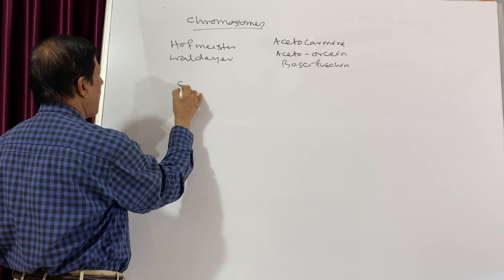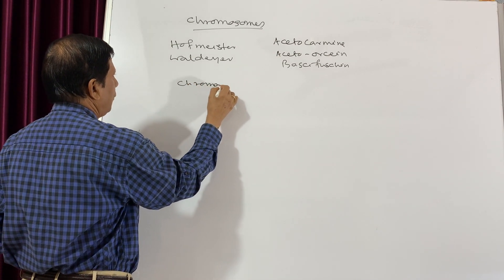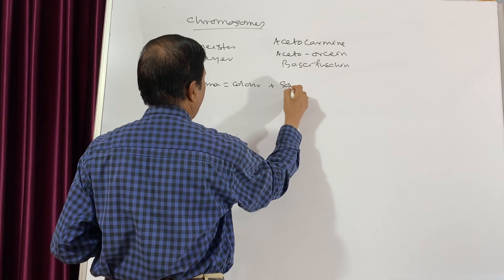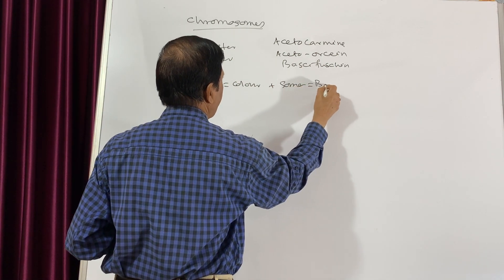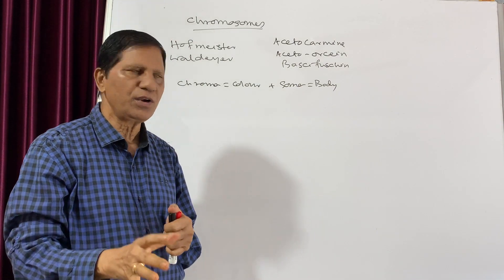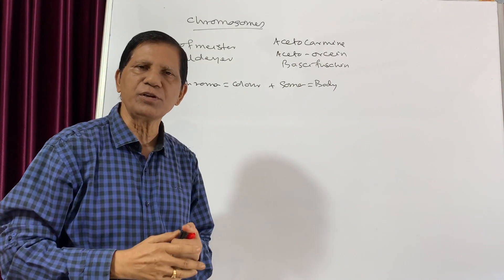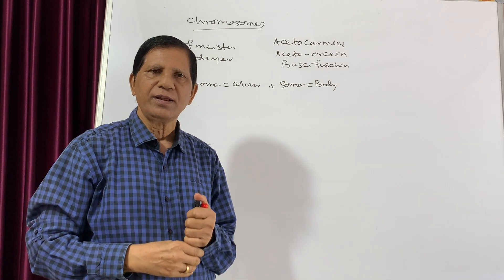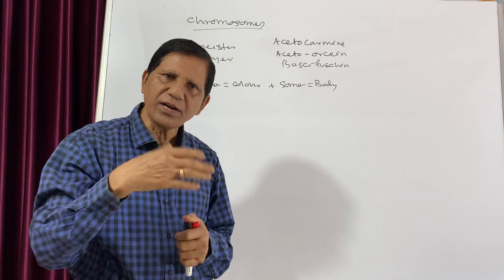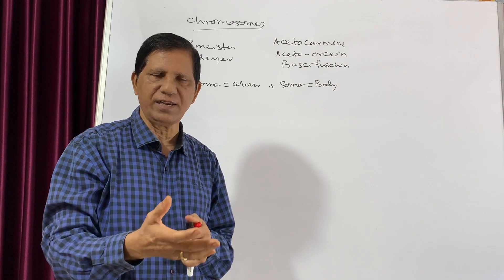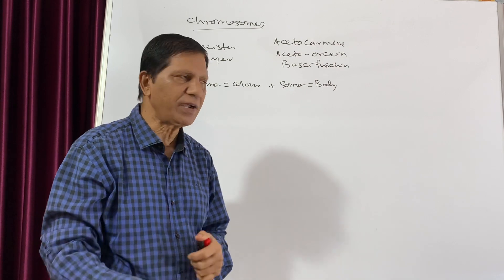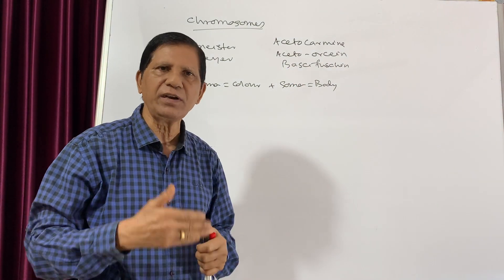So 'Chroma' means color and 'Soma' means body. That means he found inside the nucleus some colored bodies when they are stained with any one of these stains. But it doesn't mean that chromosomes are actually colored bodies inside the cell — only when the nucleus is stained by these stains does it become colored.